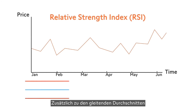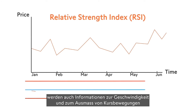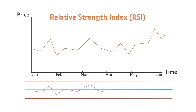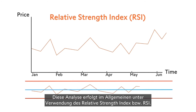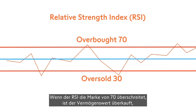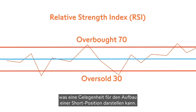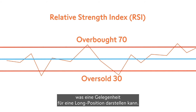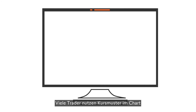In addition to moving averages, information about the speed and size of price movements are also used to gauge the strength of trends. This analysis is generally done using the so-called Relative Strength Index, or RSI. When the RSI goes over 70, the asset is overbought and might present an opportunity for a short trade. On the other hand, when the RSI goes under 30, the asset is oversold and might present an opportunity for a long trade.